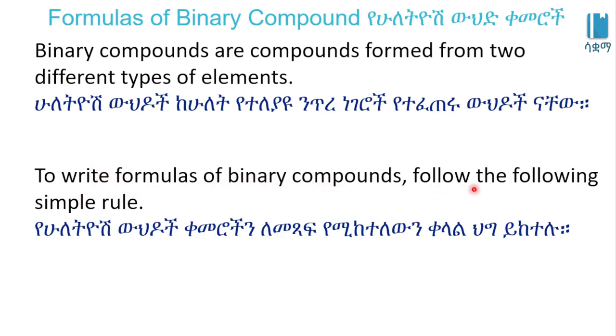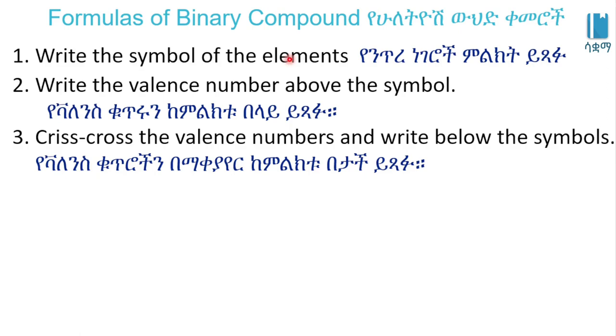To write formulas of binary compound, follow the following simple rules. In order to write the symbols of the elements, write the valence number above the symbol. When you write the symbols, the valence number will be right below the symbols.